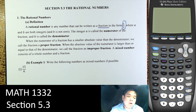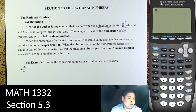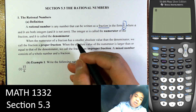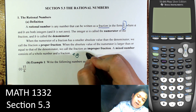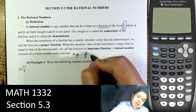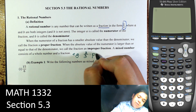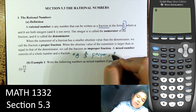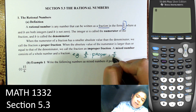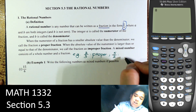When the numerator of a fraction has a smaller absolute value than the denominator, we call that a proper fraction, and if the other way around, that will be improper. For example, 2 over 3 is proper, and 5 over 2 — bigger on top — is improper.